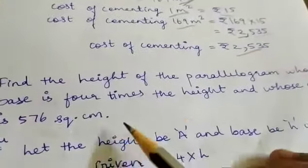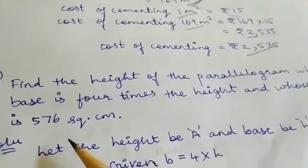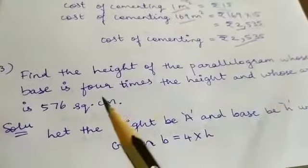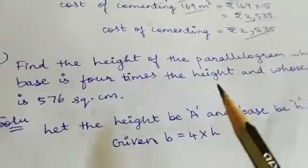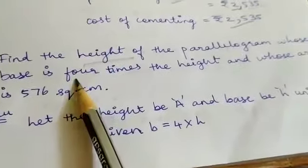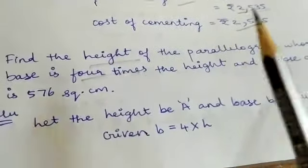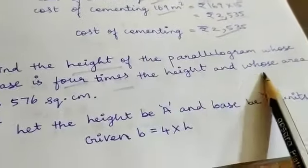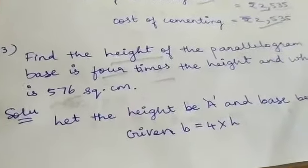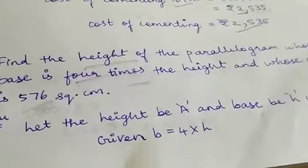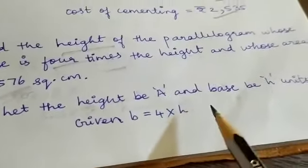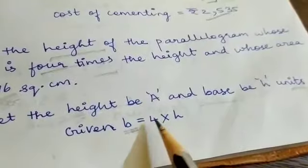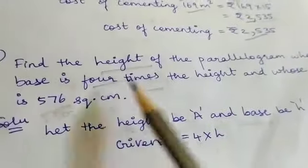Next question: Find the base and height of a parallelogram whose base is 4 times the height and whose area is 576 square centimeters. So height is H and base is B. Given base B equals 4H.